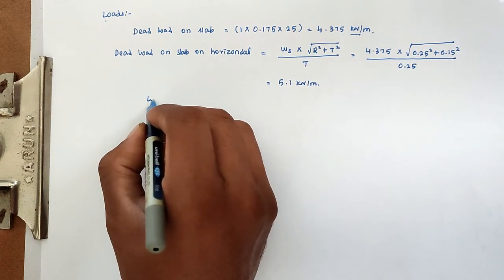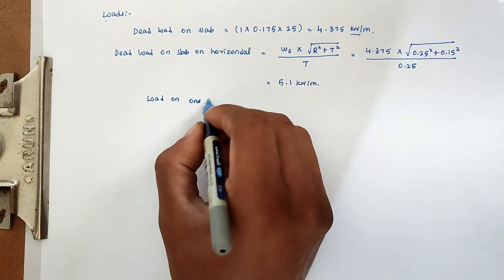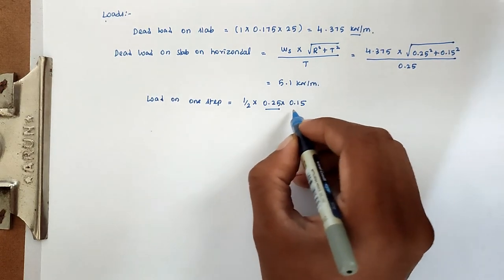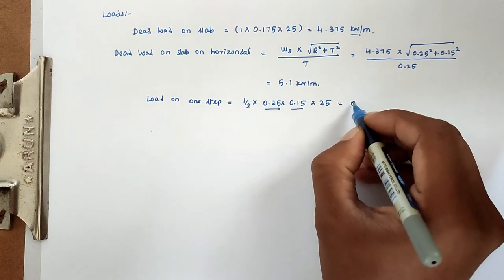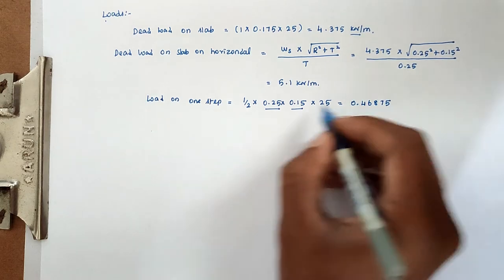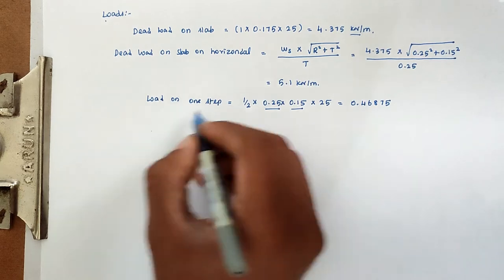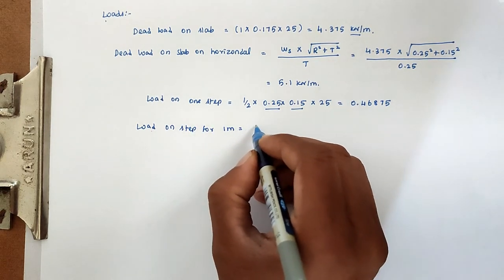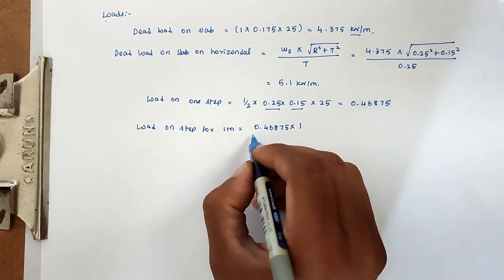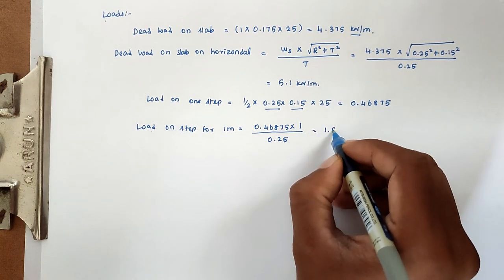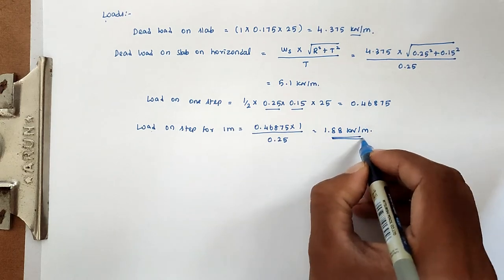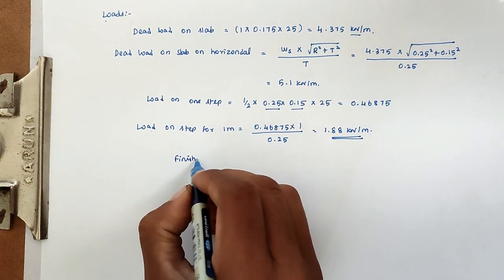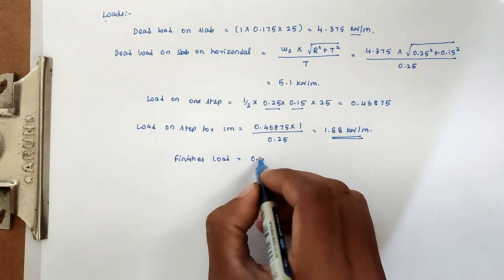Next we find the load on one step. Load on one step = ½ × 0.25 × 0.15 × unit weight of concrete = 0.46875 kN. Load on step per one meter run = 0.46875 / tread = 1.88 kN/m. Finishes load is assumed as 0.5 kN/m.